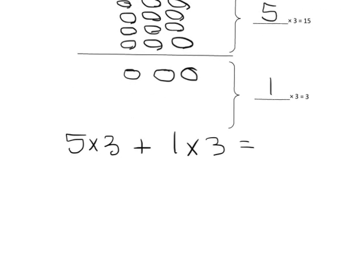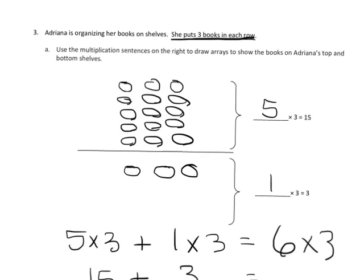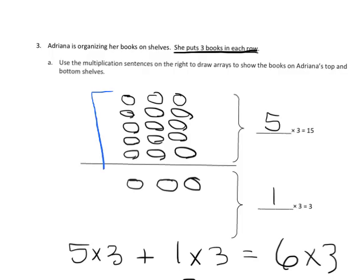...and that equals 15 plus 3, which equals 18. Now another way to do it is to call this 6 times 3, because we can see that this is really an array of 6 rows of 3.